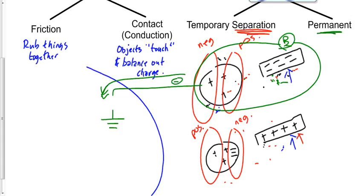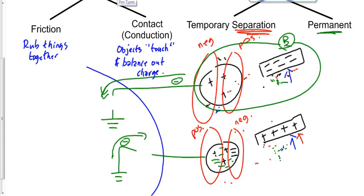Let's look at the positive rod example with grounding. Electrons are attracted to the positive object, so we can't push them down the wire this time. Instead, the Earth is not just an infinite sink — it's also an infinite source of electrons. Electrons will come up from the ground into the object, making it negative. Cut the ground wire, take object B away, and the object remains negative. The process is still called induction because there's no transfer between the objects doing the charging.